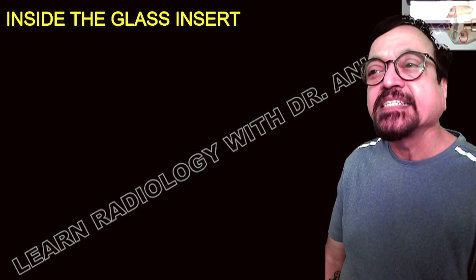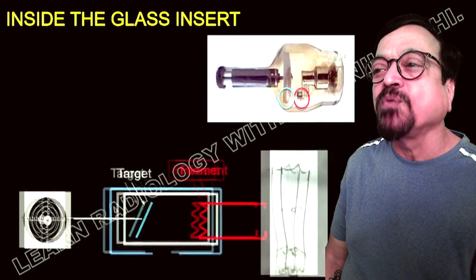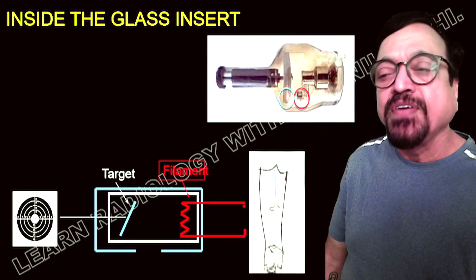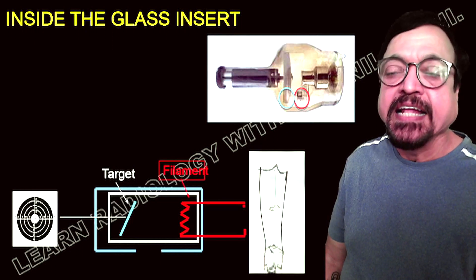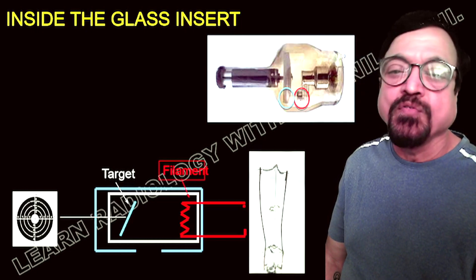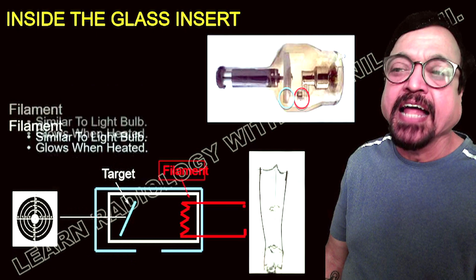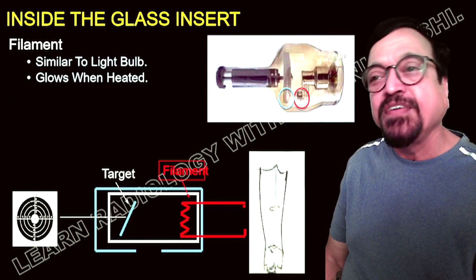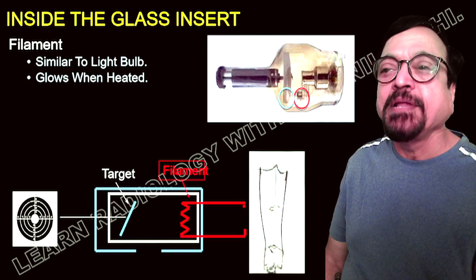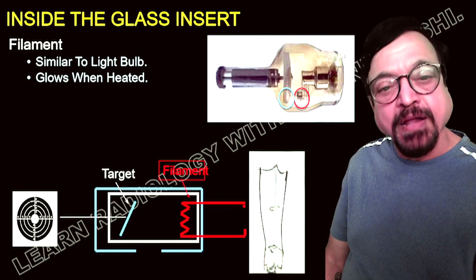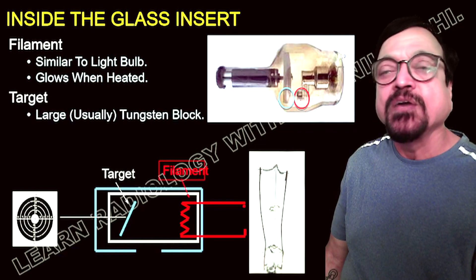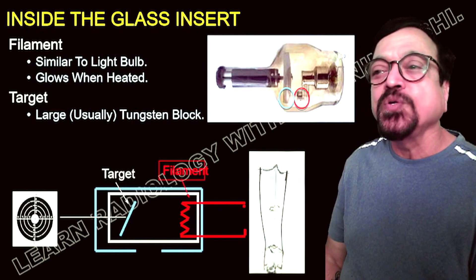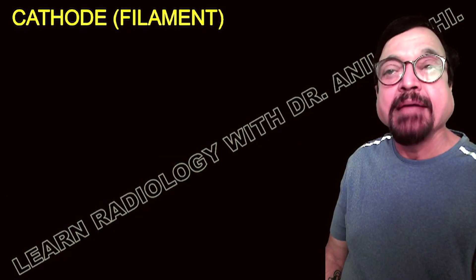The glass insert contains the anode — which can be stationary or rotating — and the filaments. The filaments can vary: there can be one filament or two, and they can be small or large, each having different roles and applications. These filaments are similar to those in an electrical light bulb — they glow when heated. In an x-ray tube, instead of producing light, they produce x-rays.